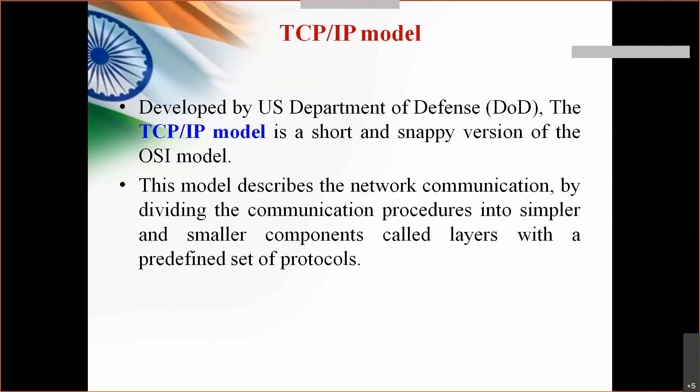When talking about a network — a collection of computing nodes communicating with each other — there are some set of functions required to be implemented between them. For example, a machine should have an identity so they can identify and communicate with each other. A machine has a local identity called a MAC address, analogous to a flat number in a society. Networks are becoming more comfortable to us day by day, and new functionalities are added continuously.